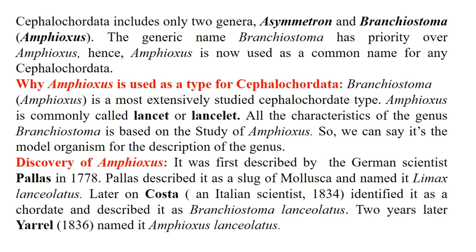Now let's see the discovery of Amphioxus. Amphioxus was first described by Pallas in the year 1778 — taxonomically it was described by Pallas. He described it as a slug of Mollusca and named it Limax lanceolatus. Later, Costa in 1834 identified it as a chordate and described it as Branchiostoma lanceolatus. Two years later, ERL in 1836 named it Amphioxus lanceolatus.